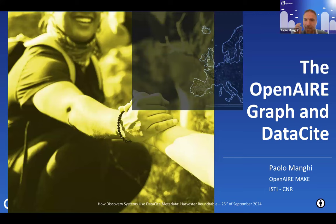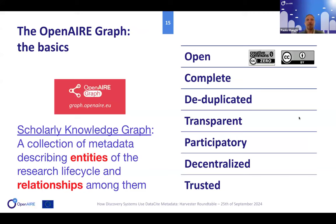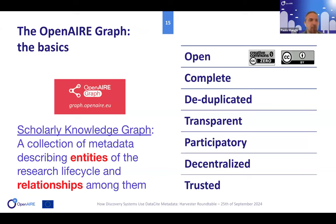I'm Paolo Mangi, CTO of OpenAIRE and in charge of the operation of the OpenAIRE Graph. Thank you to DataCite for hosting us. The OpenAIRE Graph is what they call an SKG — a scholarly knowledge graph — basically a collection of metadata representing different entities in the scholarly communication domain. We're collecting this from several sources: repositories, publishers, but also DataCite, Crossref, and main registries. The data we produce is available at CC0 to build services for discovery and monitoring.